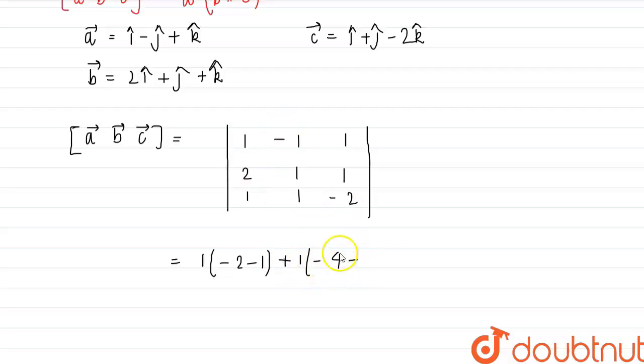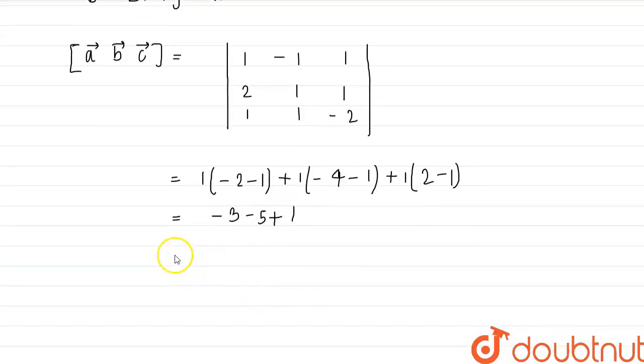plus 1 times (2 minus 1). So this is equal to minus 3, this is minus 5, and this is plus 1. So this is minus 8 plus 1, which is equal to minus 7.